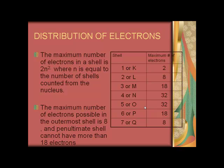Shell 4 or N shell can have 32. Shell 5 or O can have maximum of 32, 6 or P a maximum of 18 and 7 or Q a maximum of 8.